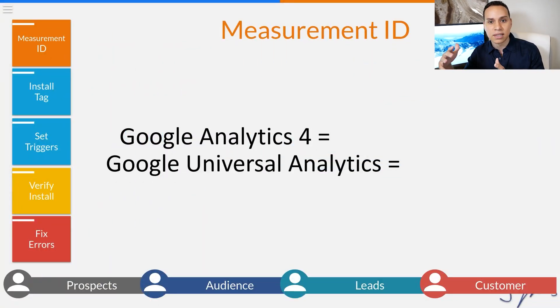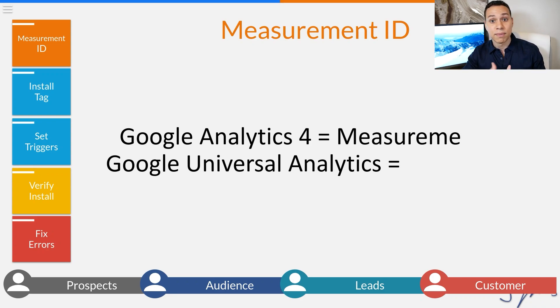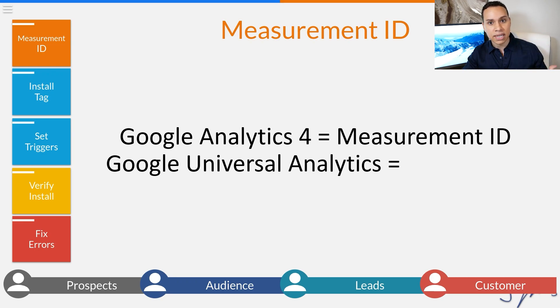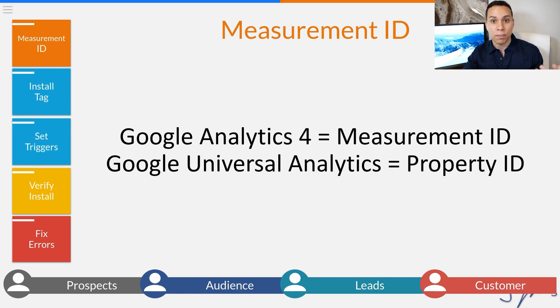When it comes to installing Google Analytics, there are actually two different codes you might be looking for depending upon the version you're using. If you're using Google Analytics 4, the new version, you're going to look for something called the Measurement ID. If you're using Universal Analytics, then you're going to be looking for your Property ID. We'll go through how to find both.